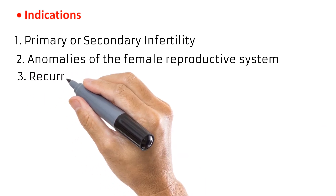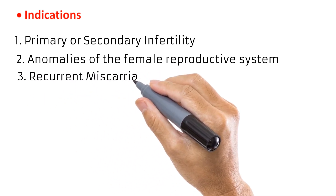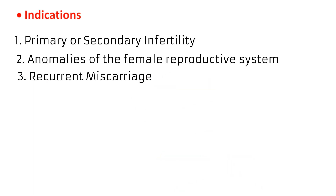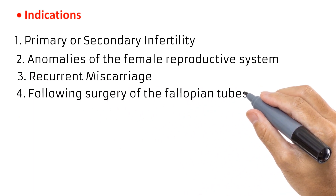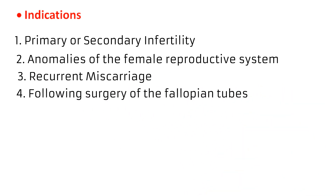Another reason for hysterosalpingography is to investigate recurrent miscarriages. Also, hysterosalpingography is performed after surgery on the fallopian tubes to see if it was successful. A good example is female tubal ligation, which is carried out as a permanent means of preventing pregnancy.